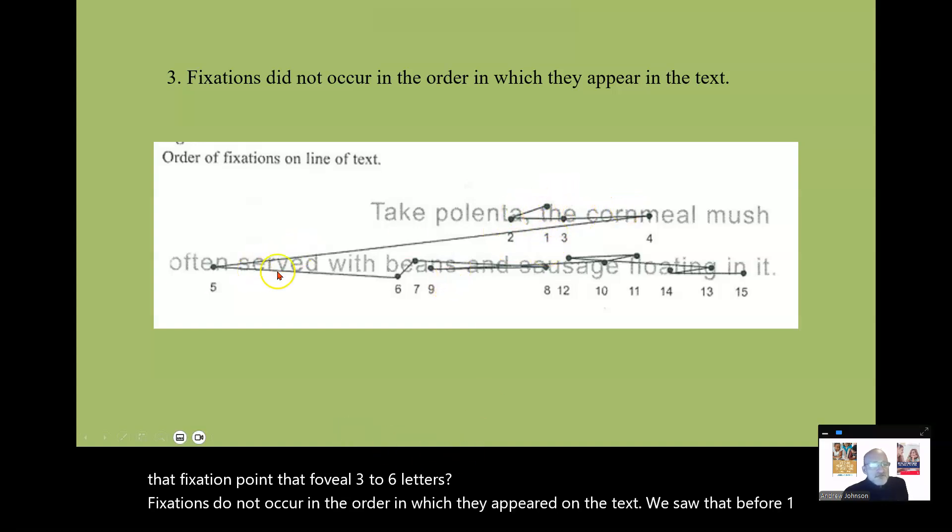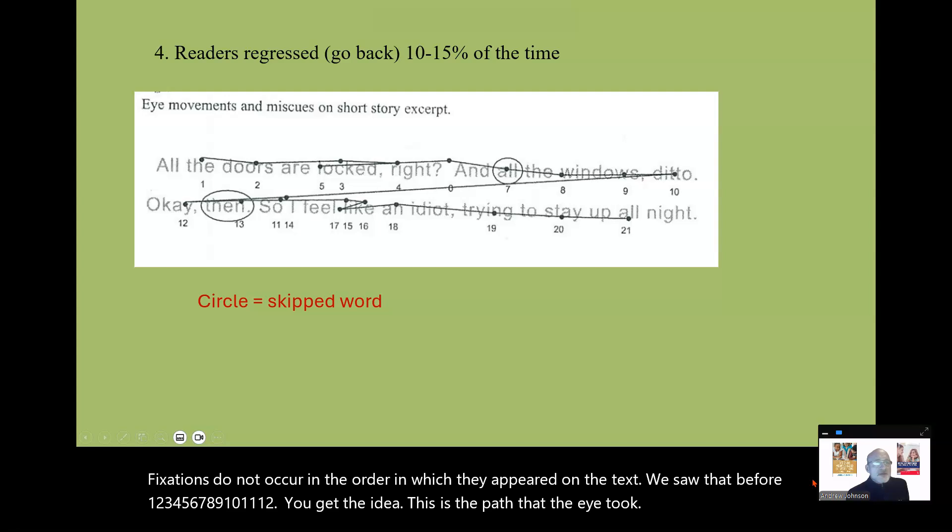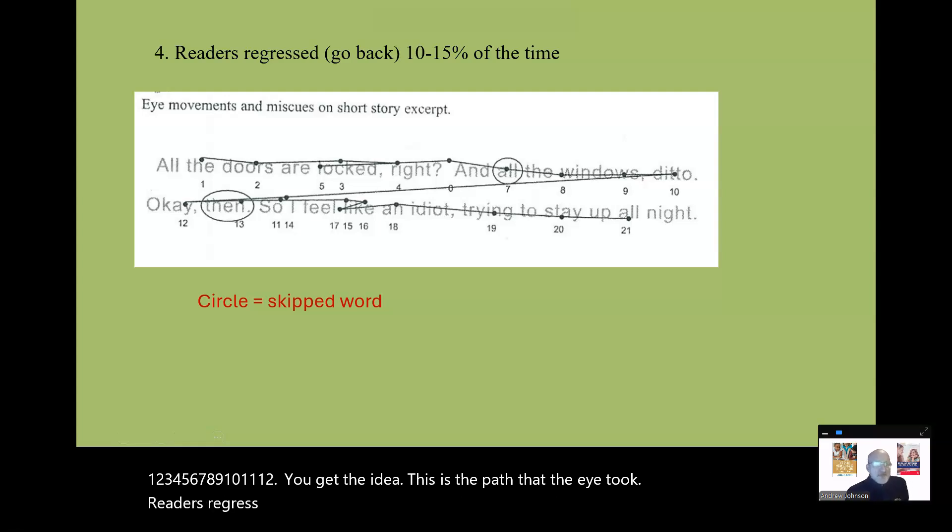Fixations do not occur in the order in which they appeared on the text. We saw that before. One, two, three, four, five, six, seven, eight, nine, ten, eleven, twelve. You get the idea. This is the path that the eye took. Readers regress 10 to 15% of the time.